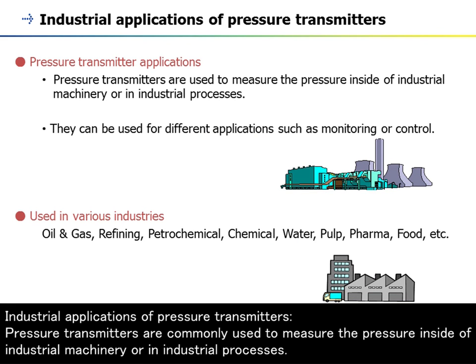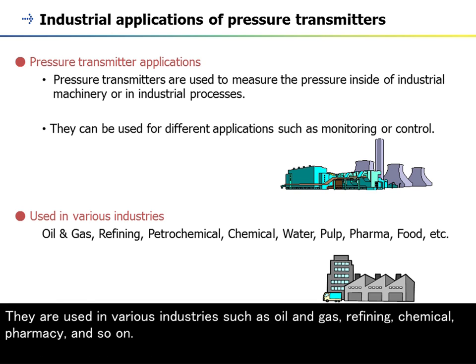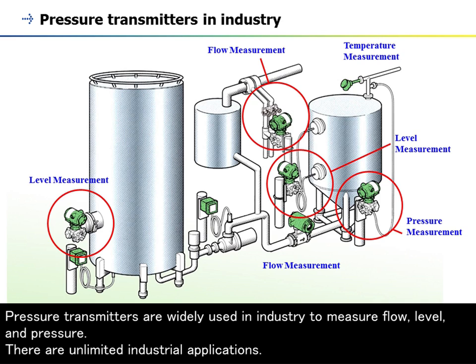Pressure transmitters are commonly used to measure the pressure inside industrial machinery or in industrial processes. They are used in various industries such as oil and gas, refining, chemical, pharmacy, and so on. Pressure transmitters are widely used in industry to measure flow, level, and pressure, with unlimited industrial applications.